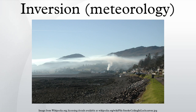An inversion can lead to pollution such as smog being trapped close to the ground, with possible adverse effects on health. An inversion can also suppress convection by acting as a cap. If this cap is broken for any of several reasons, convection of any moisture present can then erupt into violent thunderstorms. Temperature inversion can notoriously result in freezing rain in cold climates.